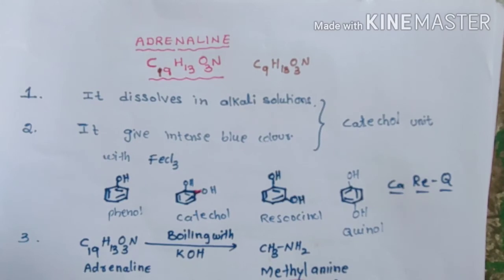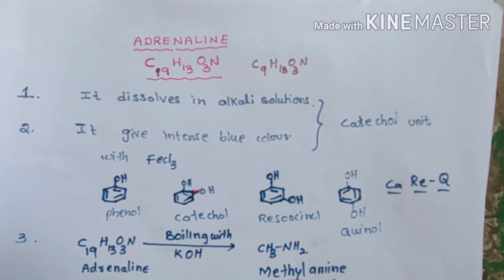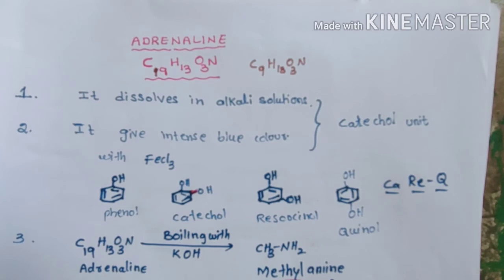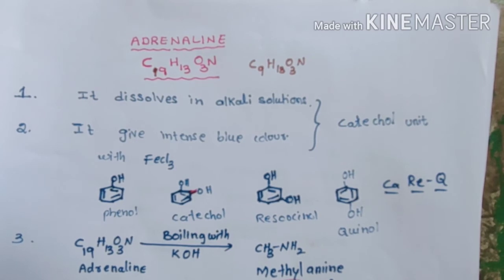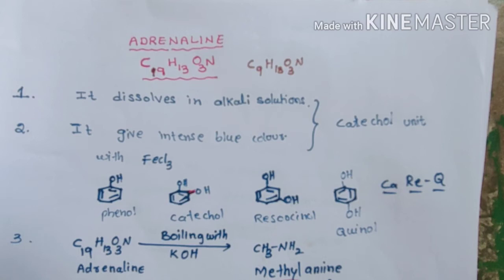In this video, we will explain the structural elucidation of adrenaline. The molecular formula of adrenaline is C9H13O3N. First, we have to identify the functional groups present in adrenaline, and then we can get an idea about its structure. The first test is that when adrenaline is added to alkalis like NaOH and KOH, it easily dissolves in those solutions. This reaction tells us that adrenaline contains a phenol group.